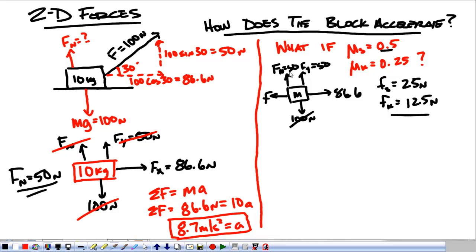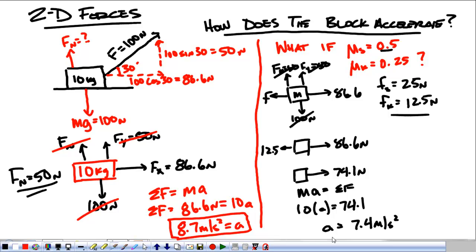So, I know these cancel out, and I'm left with 86.6 newtons this way and 12.5 newtons in this direction. So, overall, we've got 86.6 minus 12.5, that's 74.1 newtons. So, MA equals my net force, 10 times the acceleration equals 74.1, and the acceleration comes out to be 7.4 meters per second squared.